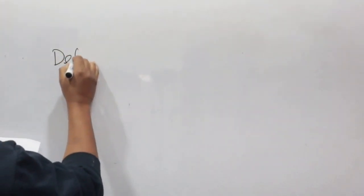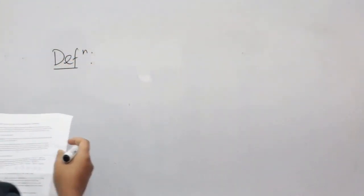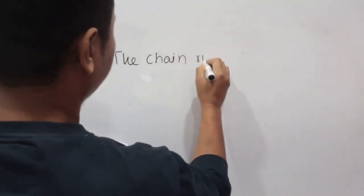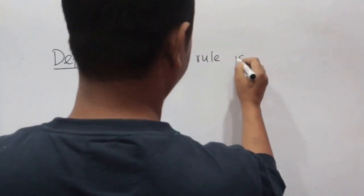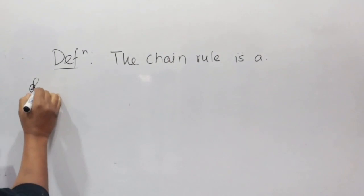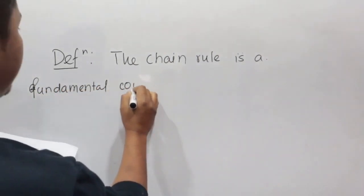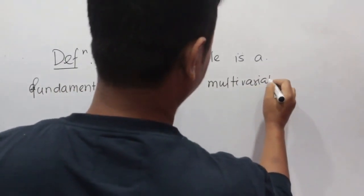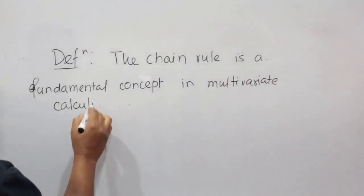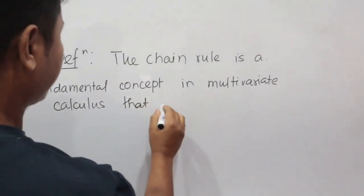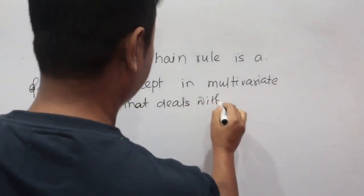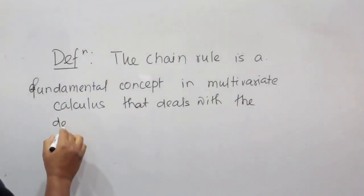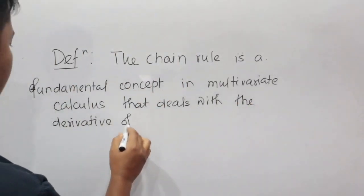Let us see the definition of the chain rule of a function of two variables. The chain rule is a fundamental concept in multivariate calculus that deals with the derivative of a composite function.